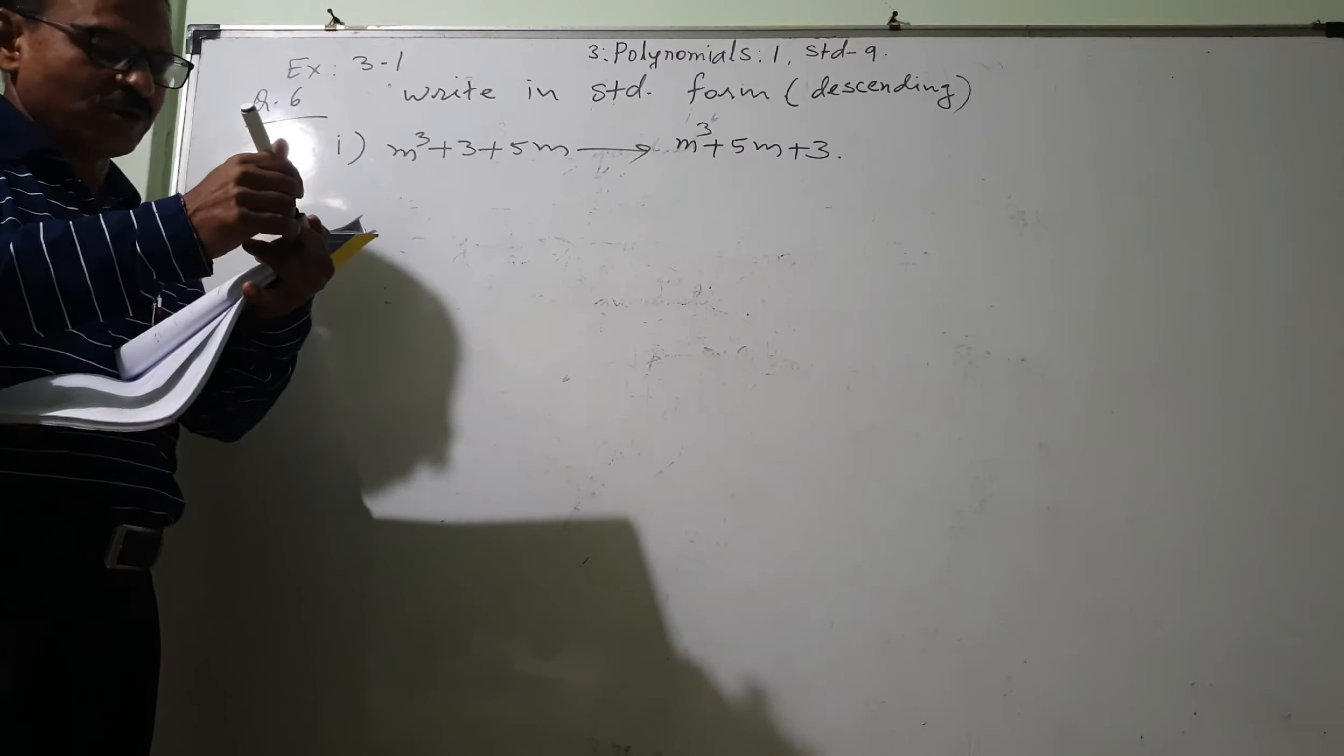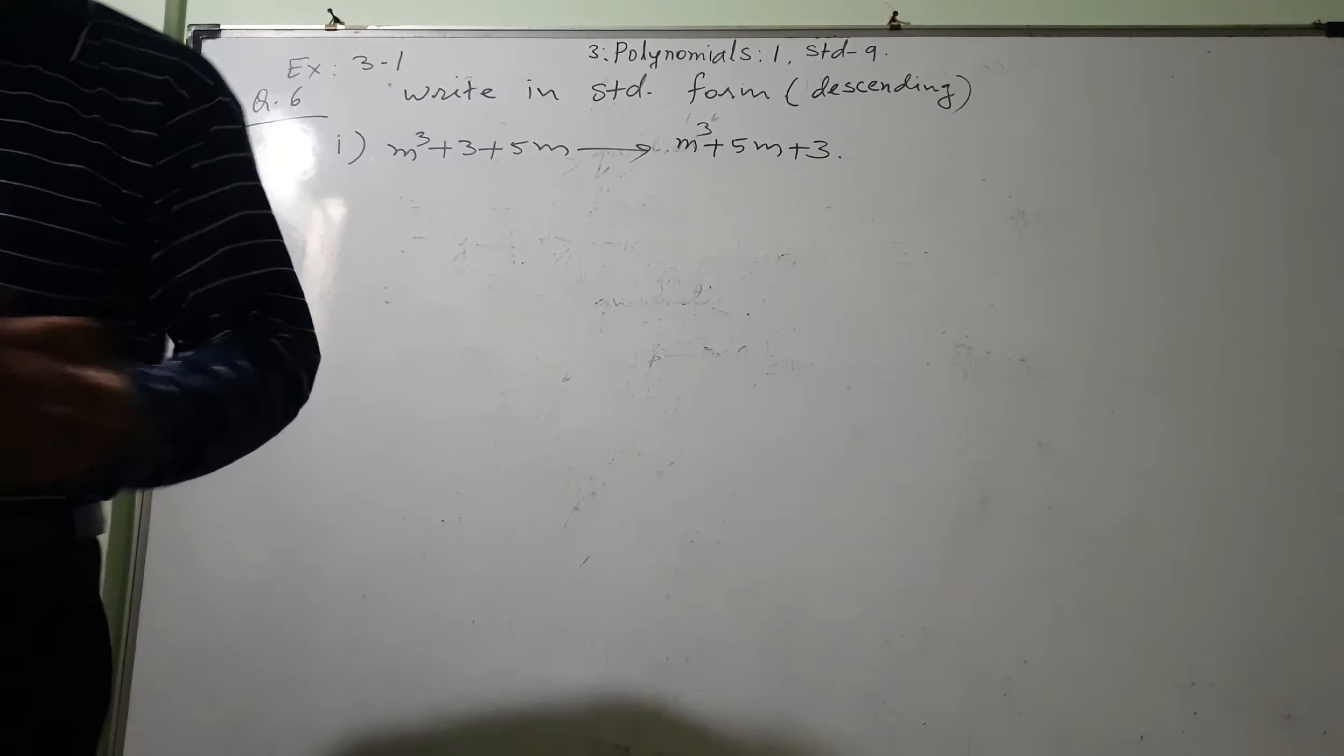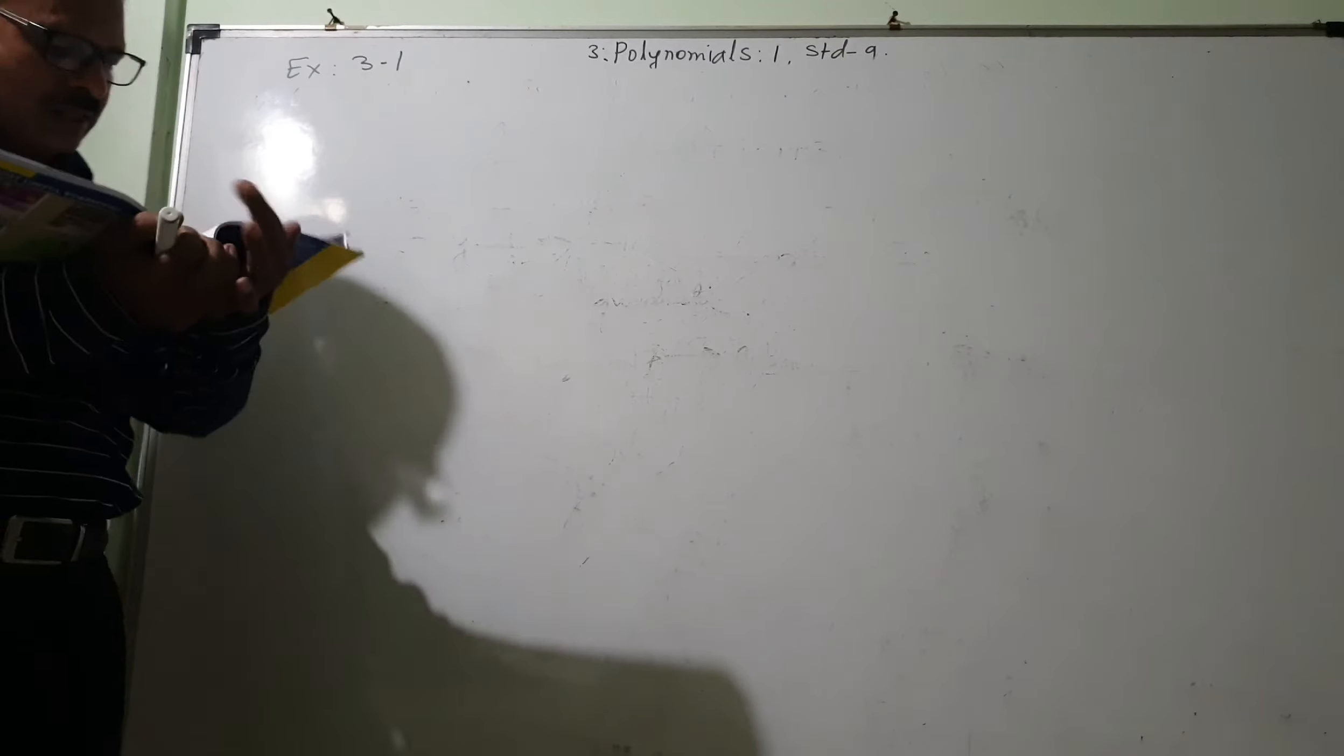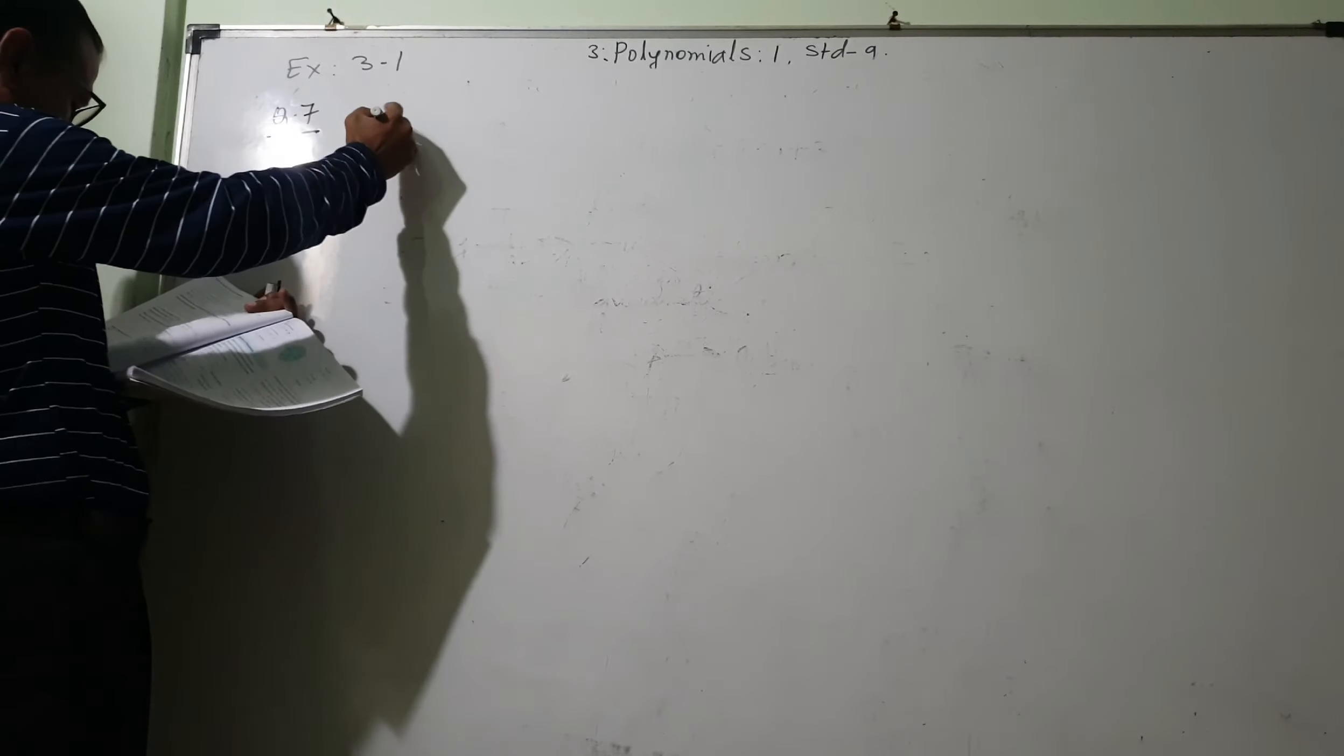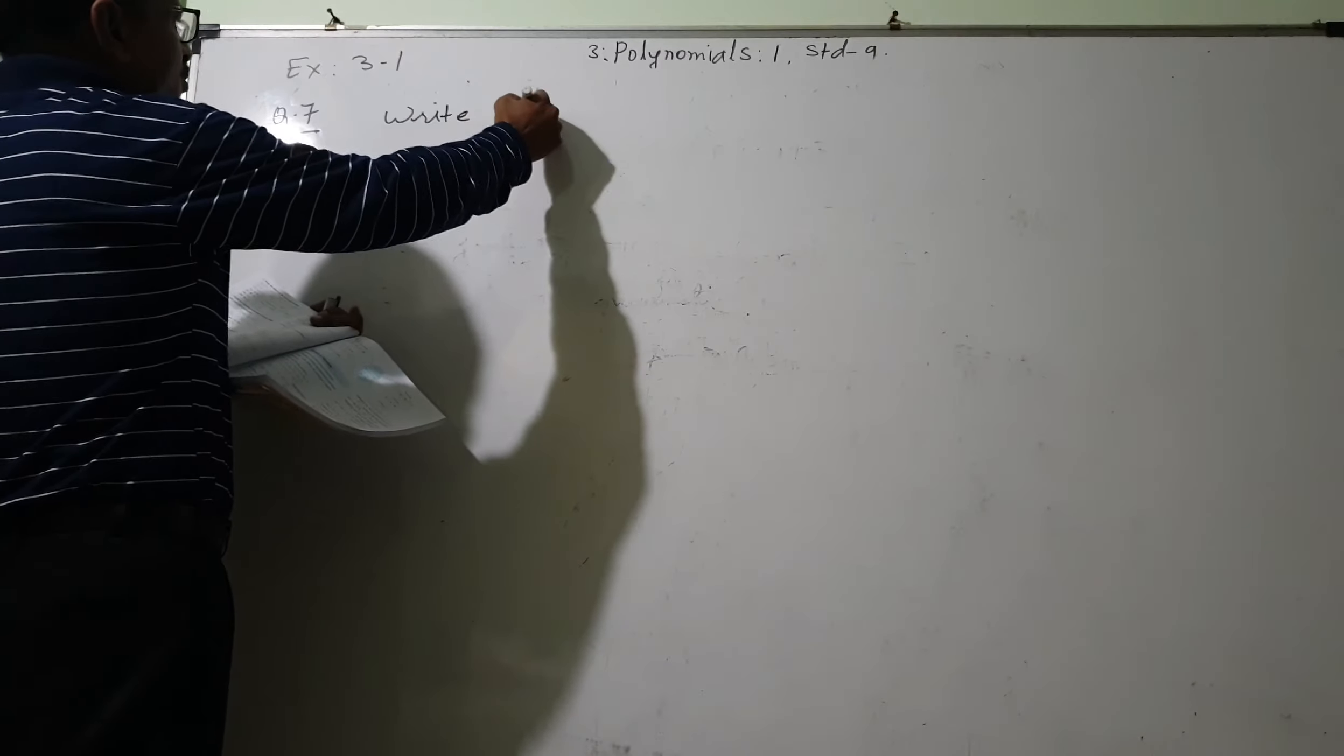This is the remaining part. I am going to leave it to you. I am not going to take that because this is a simple question. Writing coefficient form, this is important. Question number 7: write coefficient form.